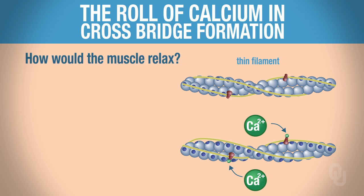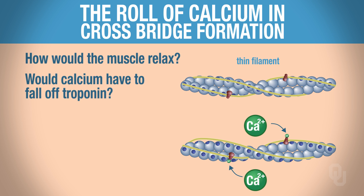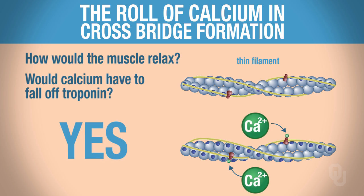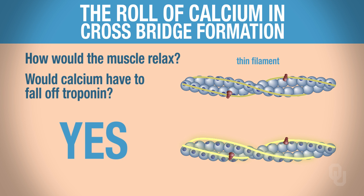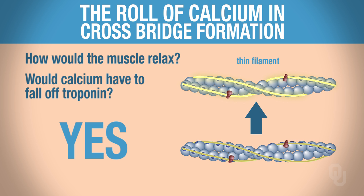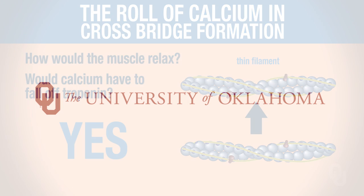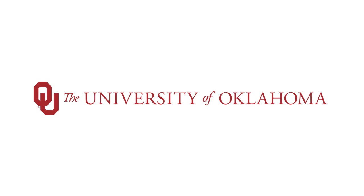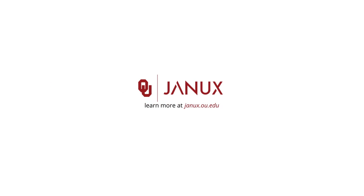How would the muscle relax? Calcium would have to fall off troponin. Tropomyosin would then shift back over and cover your myosin binding sites, and hence another crossbridge could not form.